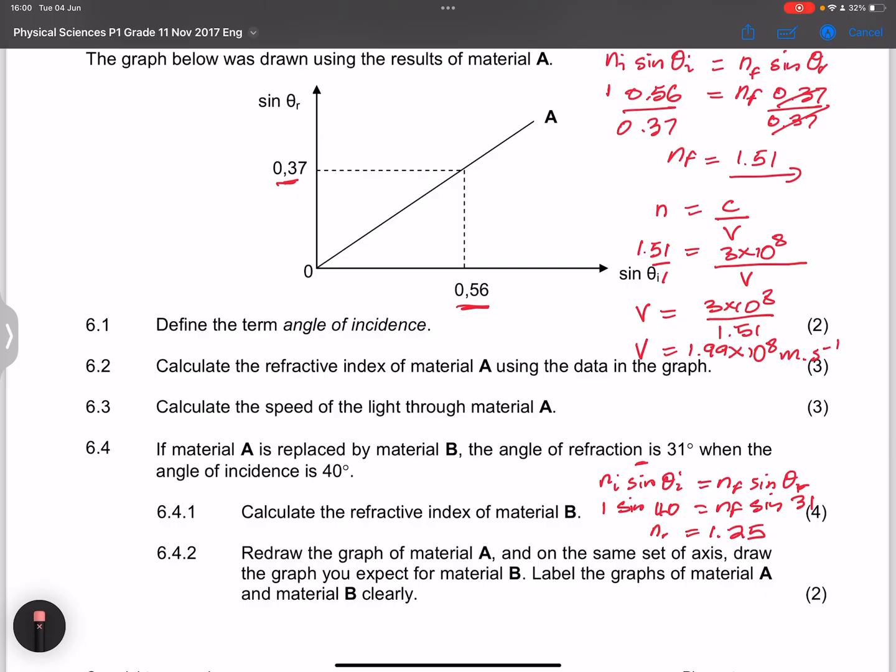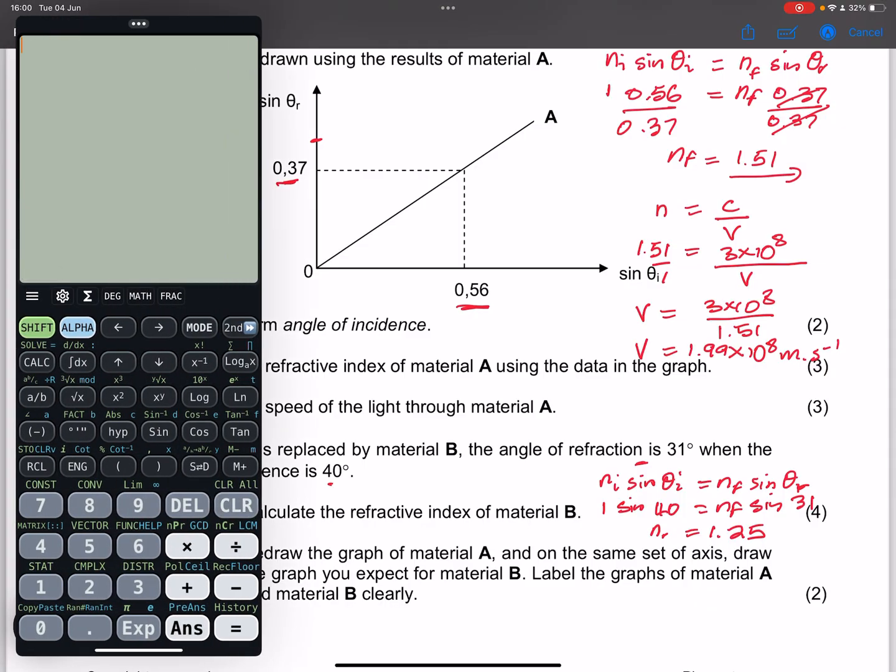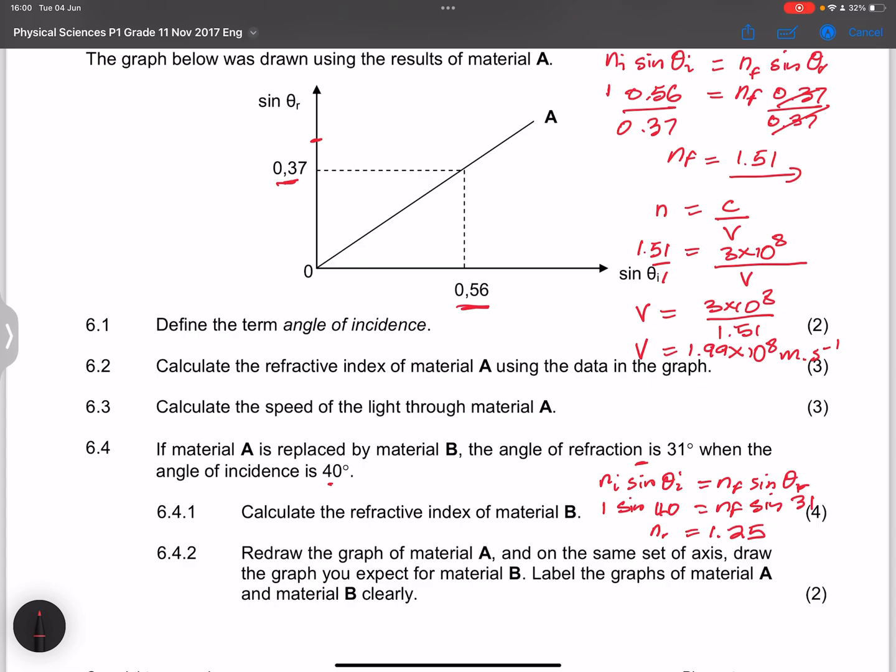So that would be my angle of refraction. So 0.5. So I would have 0.5 there. But what would be my incident angle? That would be 40. So what would be the sine of 40 there? So sine of 40 would be 0.64. So in this case, you'd have 0.64.